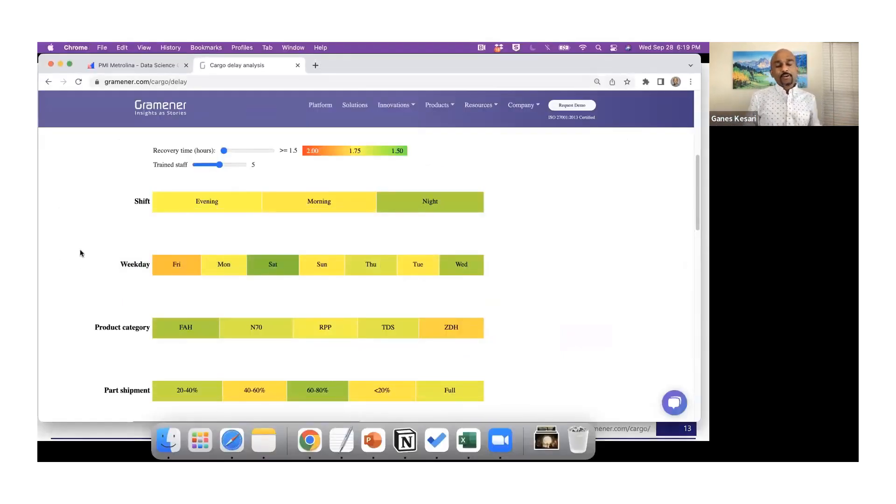Working with a cargo carrier, the challenge they were facing was from the time flights land, how much time do they take to move the cargo from the airport to the warehouse. So they had an SLA of one and a half hours. They wanted to find out what was causing the delay and what actions can they take to improve it. So is it the shift? Are morning shifts or evening shifts taking more time? You can see that the color coding: green means it is doing well, closer to red it's not doing well. You can see that morning shifts are not doing well, particularly Friday mornings.